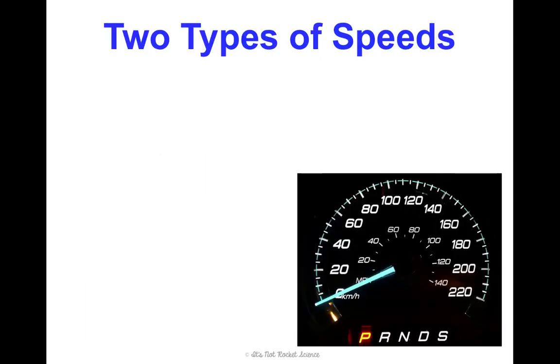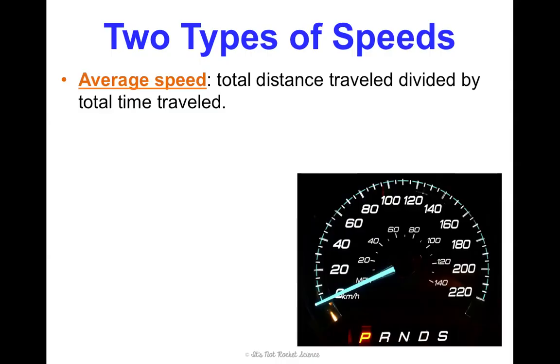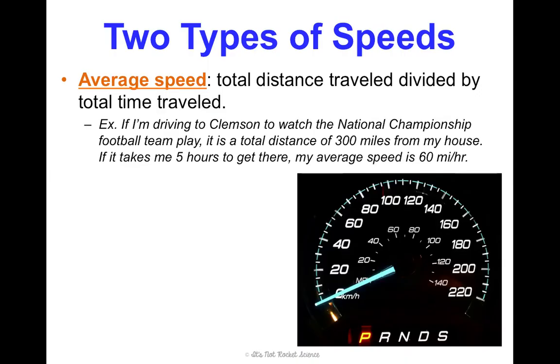Now, there's also two types of speed to consider. Now, they're not calculated any different or anything like that, but there are two types that I want you to be aware of. First is average speed. This is your total distance traveled divided by the total time traveled. So, for example, if I'm driving to go see my Clemson Tigers to watch the National Championship football team play, it is going to be a total distance of 300 miles from my house. If it takes me 5 hours to get there, my average speed for the trip is 60 miles an hour because I traveled a total distance of 300 and a total time of 5.